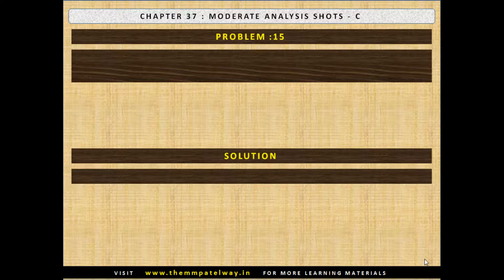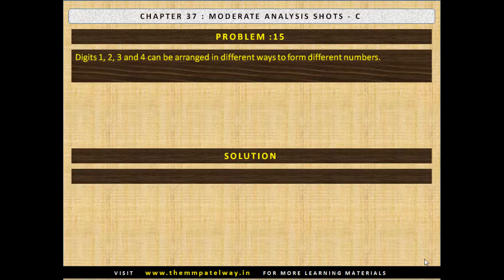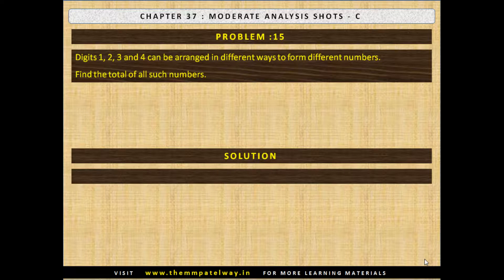Problem No. 15. Digits 1, 2, 3 and 4 can be arranged in different ways to form different numbers. Find the total of all such numbers. The solution is the total will be 66,660.